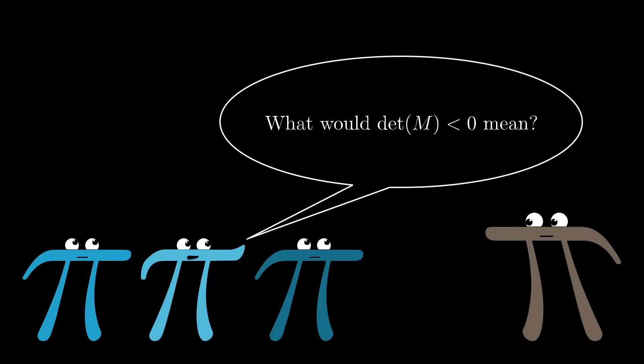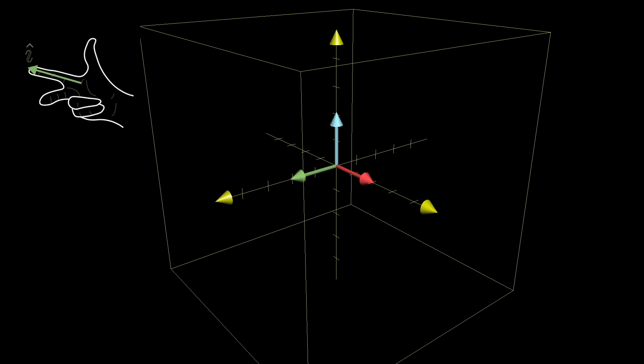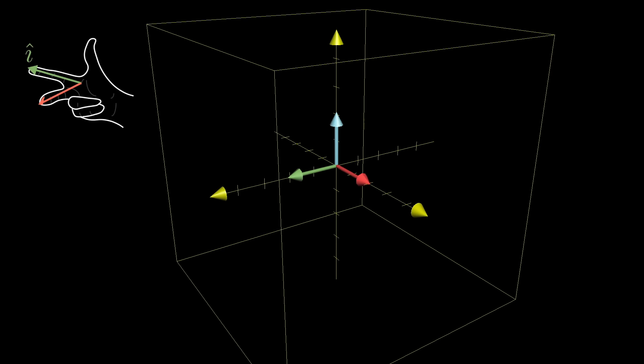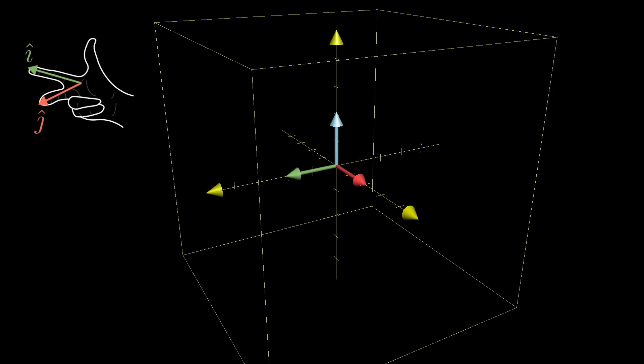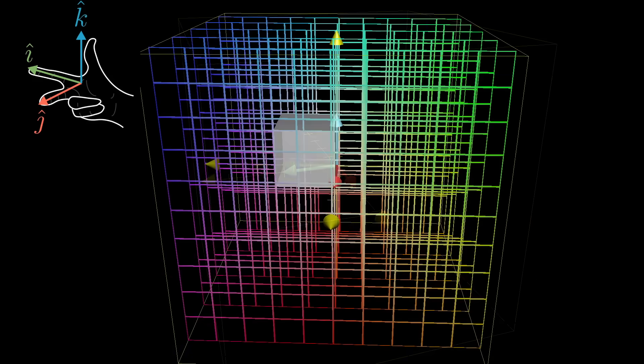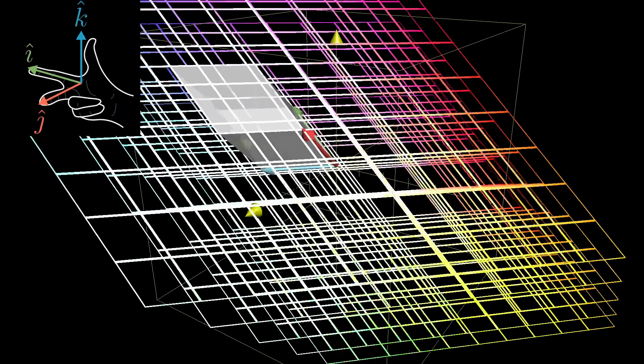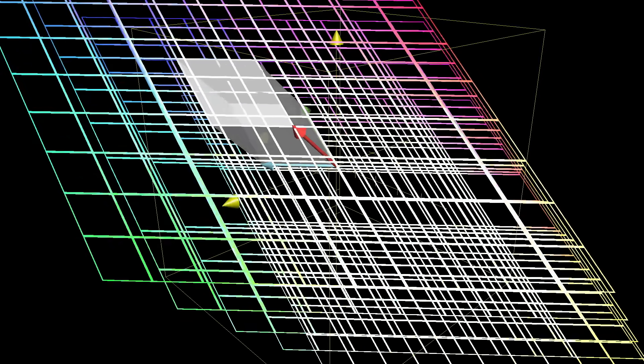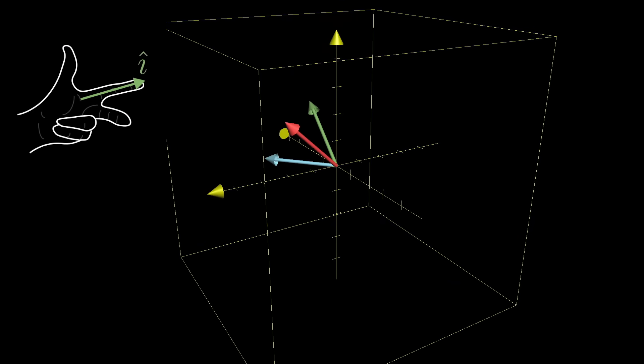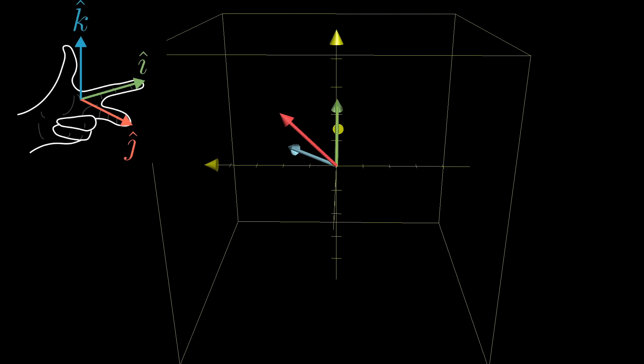What about negative determinants? What should that mean for three dimensions? One way to describe orientation in 3D is with the right hand rule. Point the forefinger of your right hand in the direction of i-hat, stick out your middle finger in the direction of j-hat, and notice how when you point your thumb up, it's in the direction of k-hat. If you can still do that after the transformation, orientation has not changed, and the determinant is positive. Otherwise, if after the transformation it only makes sense to do that with your left hand, orientation has been flipped, and the determinant is negative.